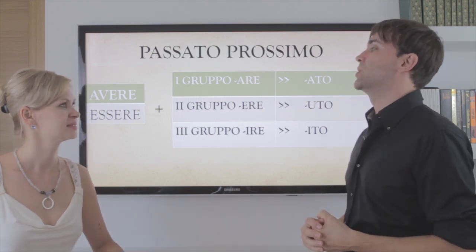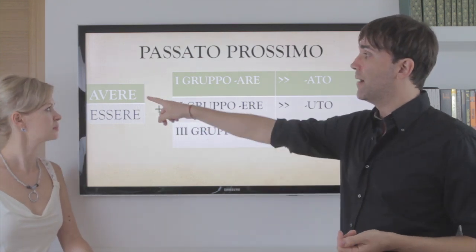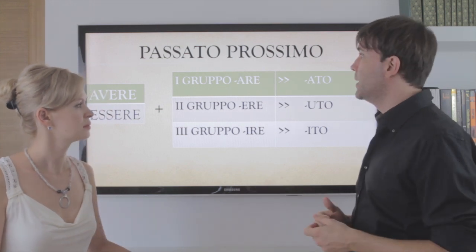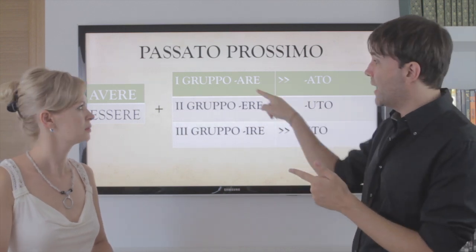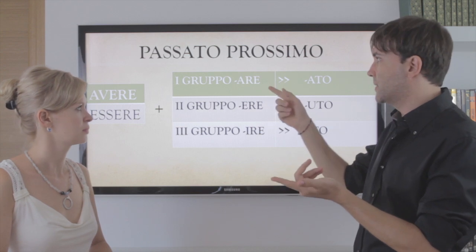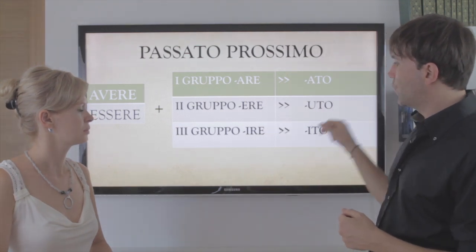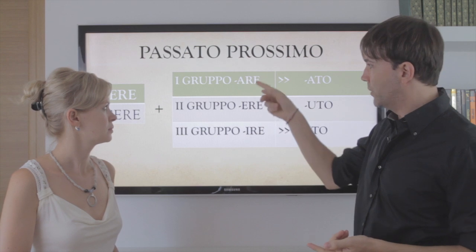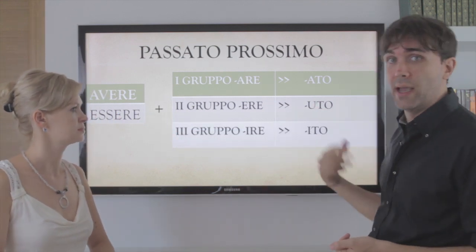How do we make il passato prossimo? Very simple. We have the auxiliary verbs, which are avere and essere. Plus we have three verb groups — are, ere, ire. From these groups we take the past participle: are becomes ato, ere becomes uto, ire becomes ito. So it's avere or essere plus one of these three endings.